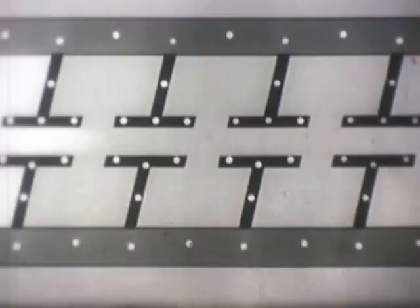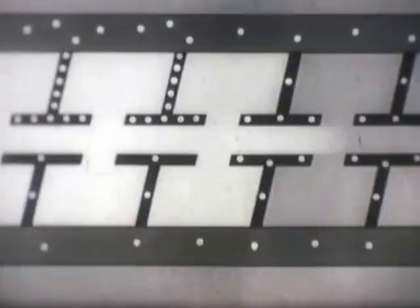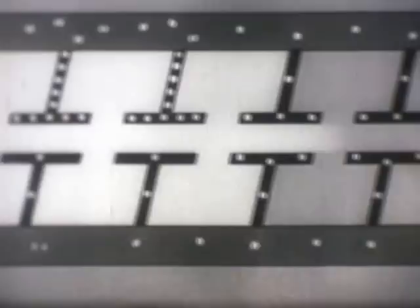When we close the switch, battery current charges the beginning of the line, or the first capacitor. As current continues to flow from the battery, successive portions of the line become charged. This is a slow motion illustration of the phenomena of electricity. Actually, this progressive charging of the line occurs almost instantaneously.